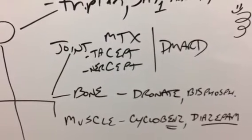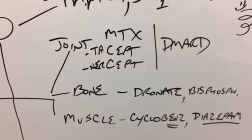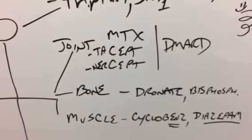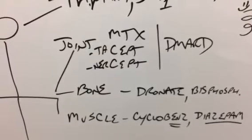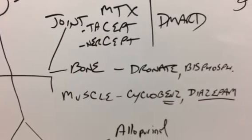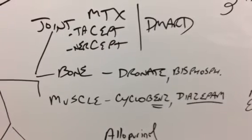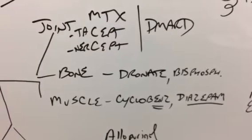So joint is methotrexate with tofacitinib and then etanercept as two of the other DMARDs for abatacept and adalimumab. Then in the bone, for osteoporosis, we have dronate, the stem for bisphosphonates.